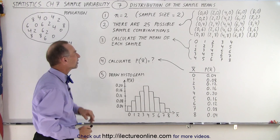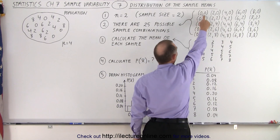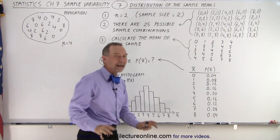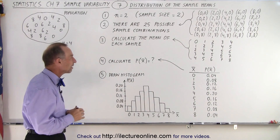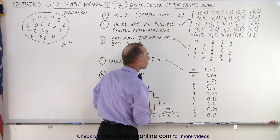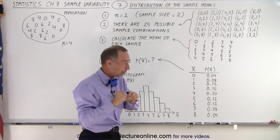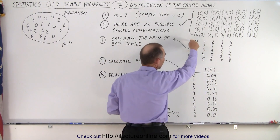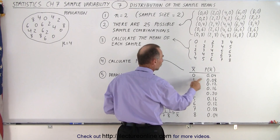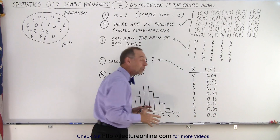Then we calculate the mean of each sample — we add the two together and divide by 2. So that's the average or mean of the first sample, the second sample, the third, and so forth. We end up with 25 averages or 25 means for the 25 possible samples. Then we calculate the probability of getting one of those means. The probability of getting an average of 0 is 0.04, the probability of getting an average of 1 is 0.08, the probability of getting an average of 2 is 0.12, and so forth.